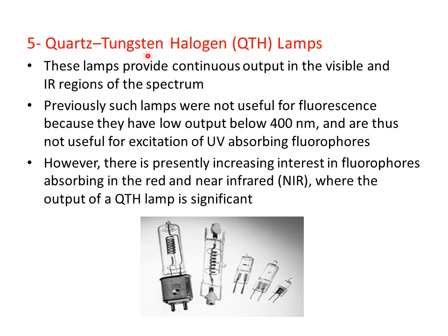Another light source is the quartz tungsten halogen lamp. These lamps provide continuous output in the visible and infrared regions of the spectrum. Previously, they were not useful for fluorescence because they have low output below 400 nanometers — that is, in the UV region — and are thus not useful for excitation of UV-absorbing fluorophores. However, there is increasing interest in fluorophores absorbing in the red and near-infrared region, and for such fluorophores, quartz tungsten halogen lamps are preferred.